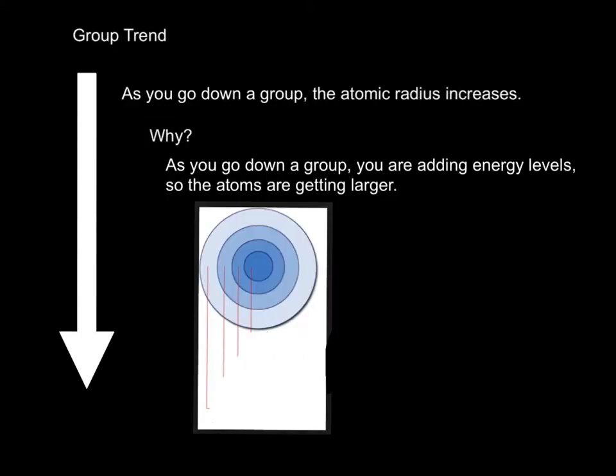Now that we know what it is, let's look at the trends. We're always going to look at two trends. The group trend, that's what happens when you go down a group. So when we go down a group, the atomic radius increases. The atoms get bigger. Well, why is that?